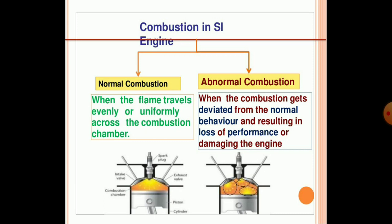First of all, we see what is normal combustion. We can say that when the flame travels evenly or uniformly across the combustion chamber, then we can say it is normal combustion. When the combustion gets deviated from normal behavior, resulting in loss of performance or damaging of the engine, such combustion we can say is abnormal combustion in the SI engine. We will discuss what kind of abnormal combustion occurs and how it affects the engine and various parts of the SI engine.